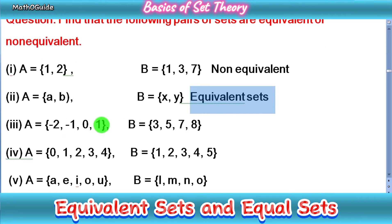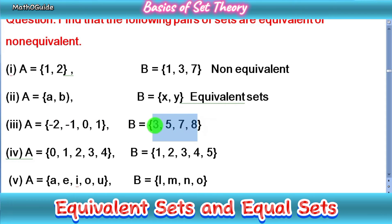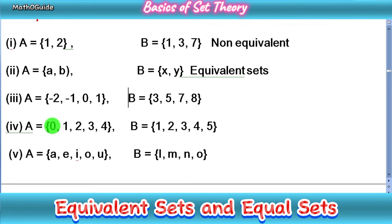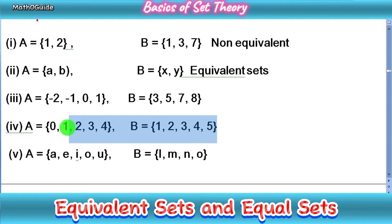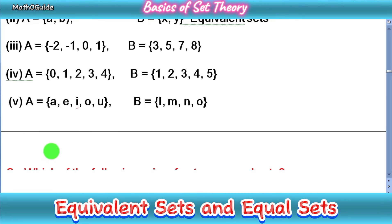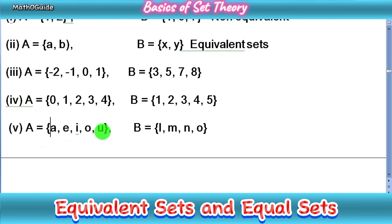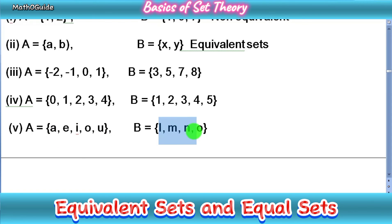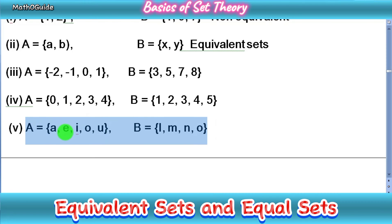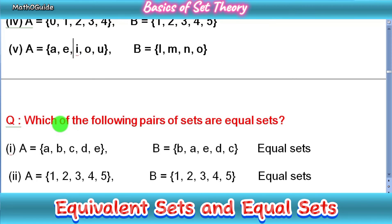In part three, set A is {-2, -1, 0, 1} — four elements — and set B also has four elements, so A and B are equivalent. In part four, set A has {0, 1, 2, 3, 4} — five elements — and set B also has five elements, so these are equivalent. In part five, set A has vowels {a, e, i, o, u} — five elements — but set B has {l, m, n} — only four elements — so these are non-equivalent sets.